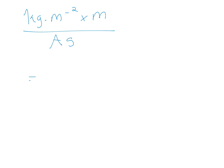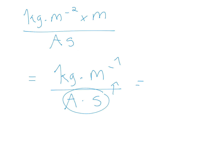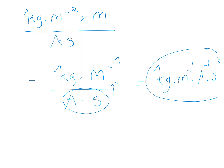So A is eliminated. Let's try pressure and stress (choice B). Working through the units, we get kg multiplied by m⁻¹, and when the denominator terms are moved up they become negative powers: kg m⁻¹ A⁻¹ s⁻².